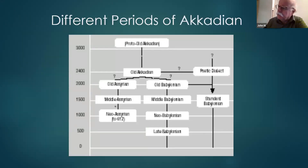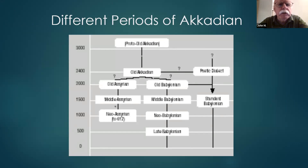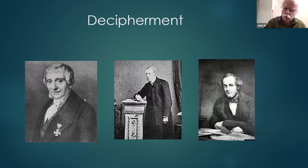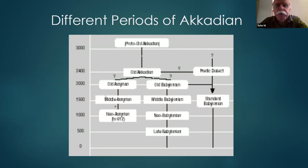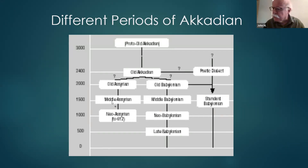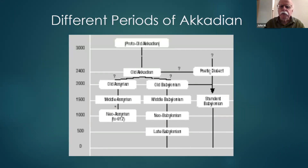Here are the different periods and dialects of Akkadian. We have proto-Old Akkadian at 3000 BC — that's hypothetical, we don't have many texts of that. Then around 2400 BC we start to get texts all in Akkadian. Assyrian and Babylonian are the two major dialect areas, both with Old, Middle, and Neo stages. There's also a poetic dialect starting in the Old Akkadian period with its own forms.